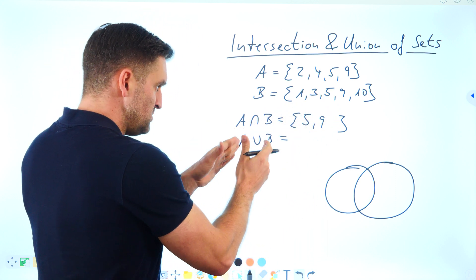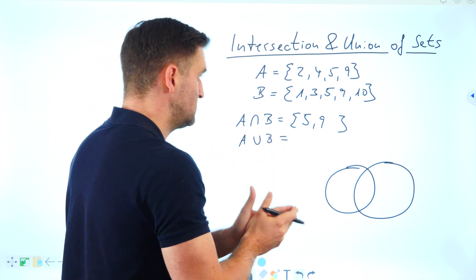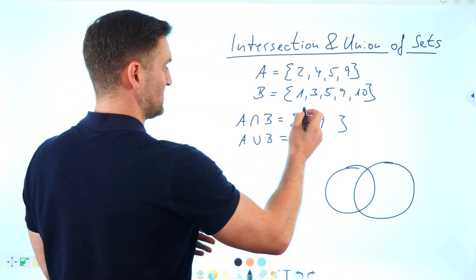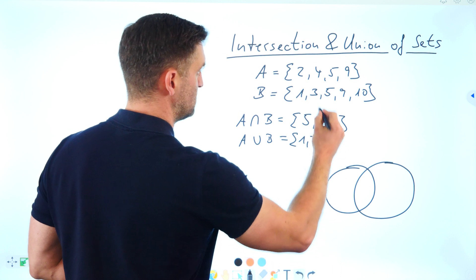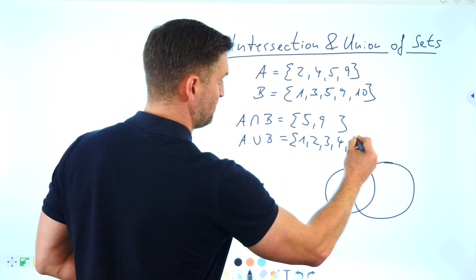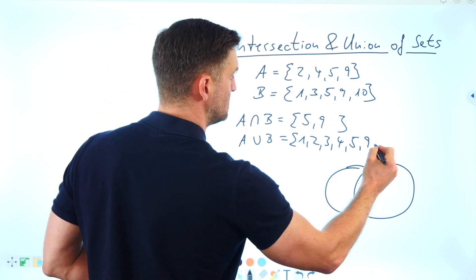The union of set A and B is every element, but we list each element only once. We have 1, 2, 3, 4, 5 (just listed one time), 9, and 10.